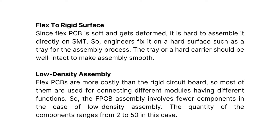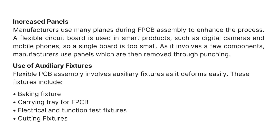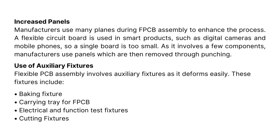The quantity of components ranges from 2 to 50 in the case of low-density assembly. Manufacturers use many panels during FPCB assembly to enhance the process. A flexible circuit board is used in smart products such as digital cameras and mobile phones, so a single board is too small. As it involves few components, manufacturers use panels which are then removed through punching. Flexible PCB assembly also involves auxiliary fixtures, including baking fixture, carrying tray for FPCB, and electrical and function test fixtures and cutting fixtures.